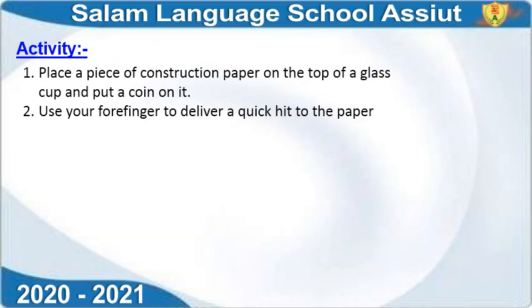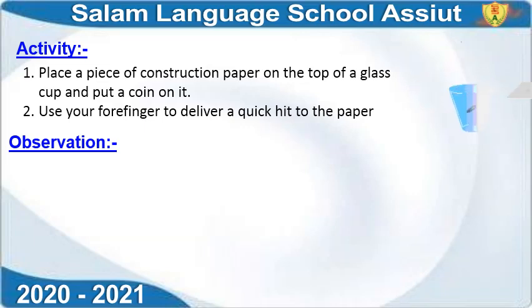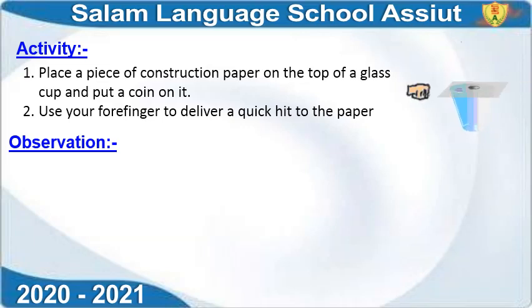Another activity: place a piece of construction paper on top of a glass cup and put a coin on it. Use your finger to deliver a quick hit to the paper — like a playing card on a cup with a coin on top. Hit the card quickly. You'll find the card moves but the coin doesn't move with the card. The coin resists the motion, stays in place, and falls into the cup.